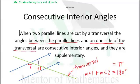Likewise, these two angles would have the same relation. The measure of angle three plus the measure of angle four would also be 180 degrees. So we would say that angles one and two are supplementary or angles three and four are supplementary.